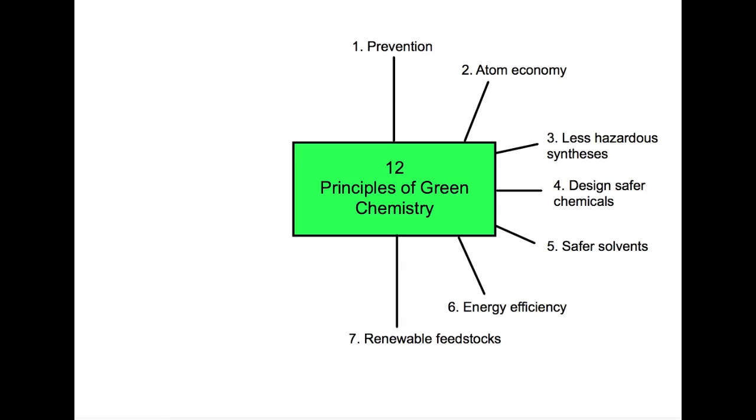Number seven is we should be using renewable feedstocks. So we should be trying to cut down our use on fossil fuels as much as possible.